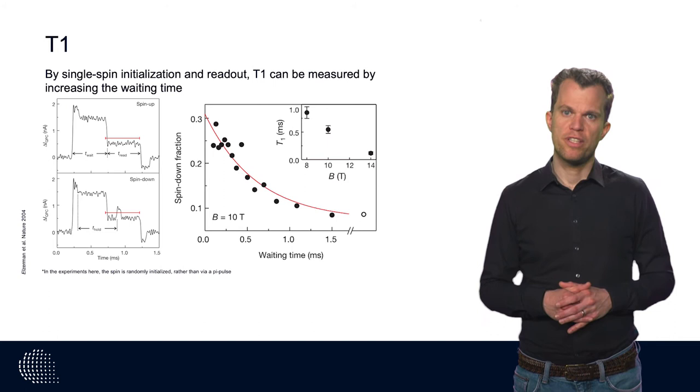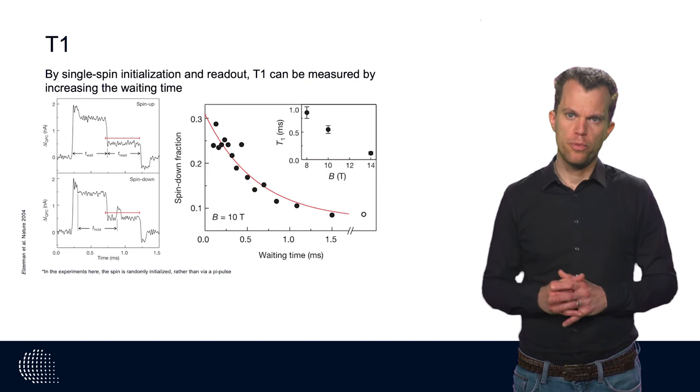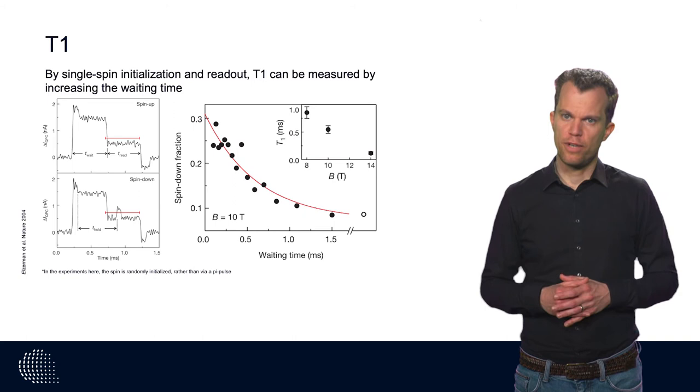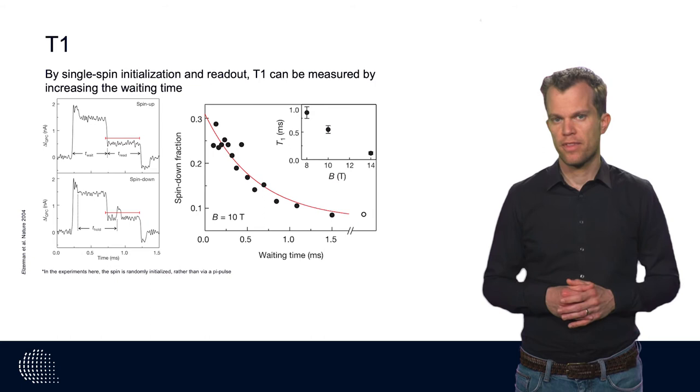The probability for a bit-flip error to occur can be assessed by measuring the spin relaxation time. We initialize the spin qubit in its ground state, for example by using the Elzerman method as described before. Then we apply a pi pulse by applying a microwave signal on resonance with the spin qubit such that the electron spin is in the spin-up state.